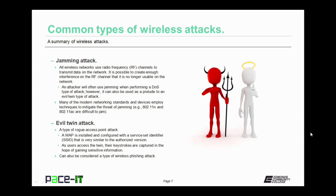The evil twin attack is a type of rogue access point attack. A wireless access point gets installed and configured with a service set identifier — that's the SSID, also known as the network name — that is very similar to the authorized version. They're hoping that users will log on to their wireless access point. To help that along, they may employ a jamming attack. As users access the twin, their keystrokes are captured in the hopes of gaining sensitive information, such as login credentials.